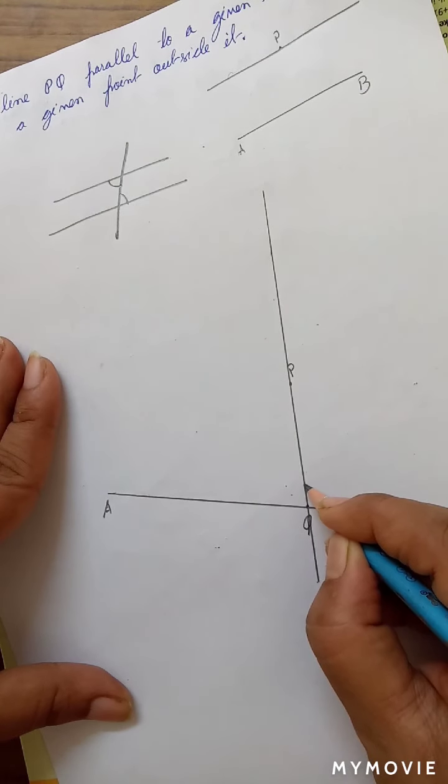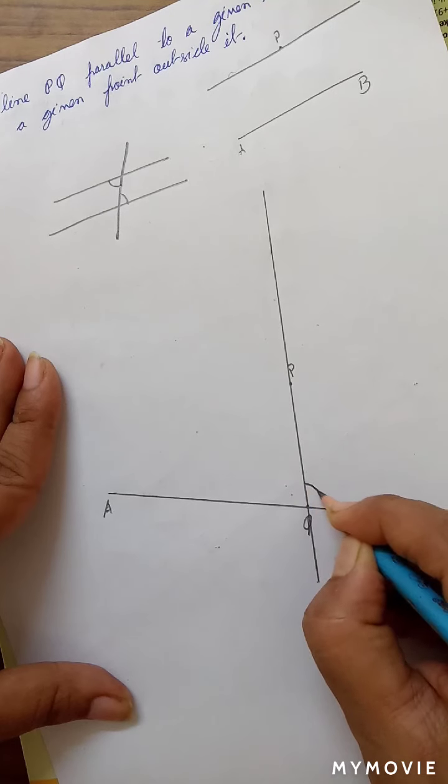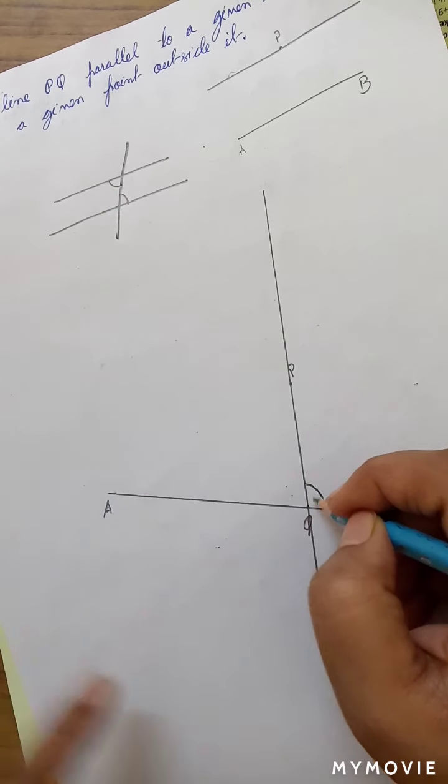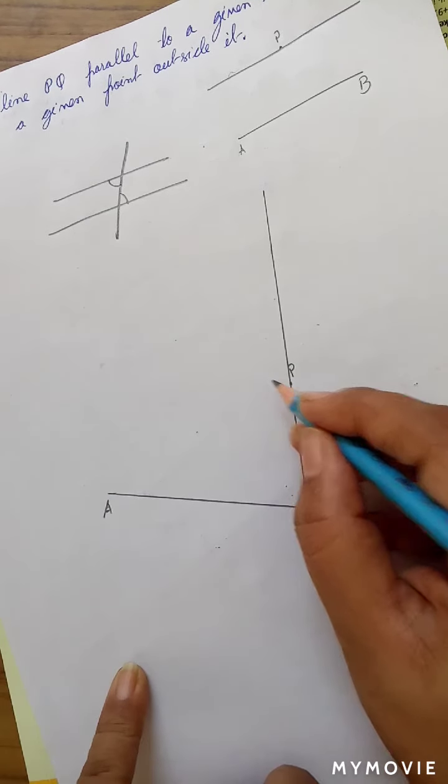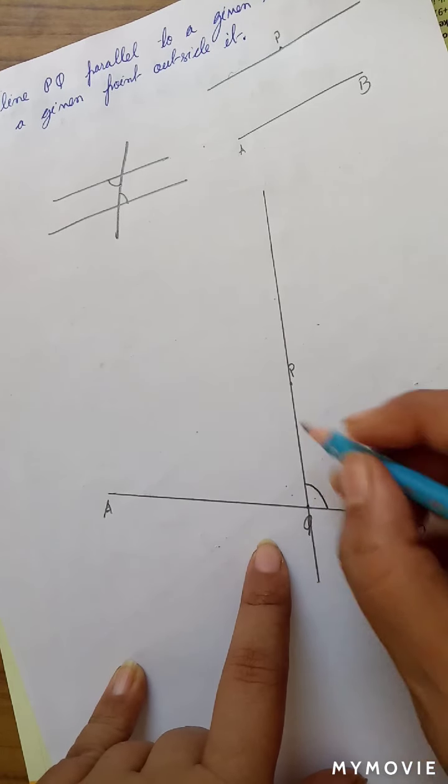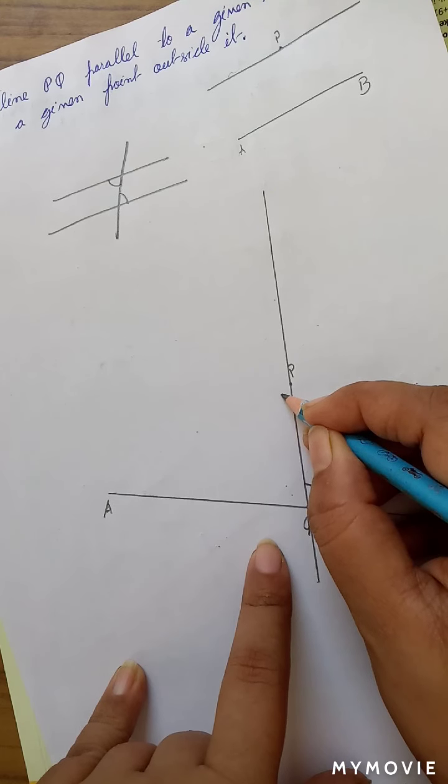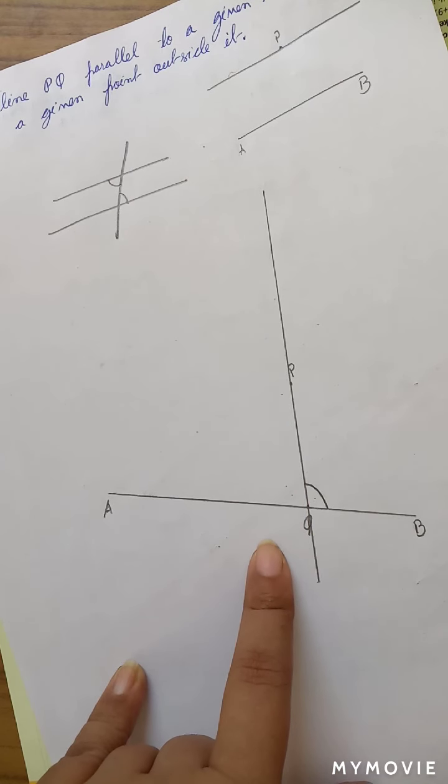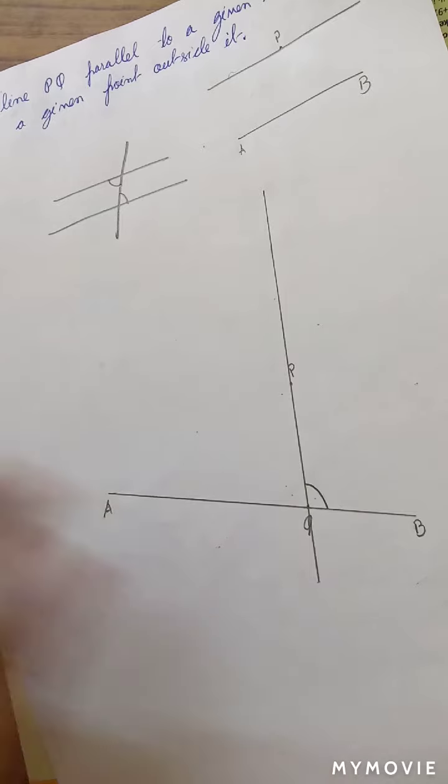We will construct an angle here, and we will construct the same angle here. And then, because this angle will be equal to this angle, the lines will be parallel. Let's wait and watch.